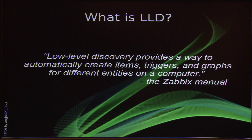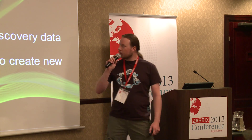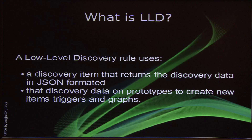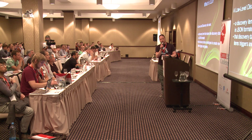What is low-level discovery? The manual says that it's a way to automatically create items, triggers, and graphs for all the different entities on a computer. It actually uses an item that returns a JSON-formatted string that you can then interpret on the Zabbix server, and it will use prototypes that will create these items, triggers, and graphs for you.